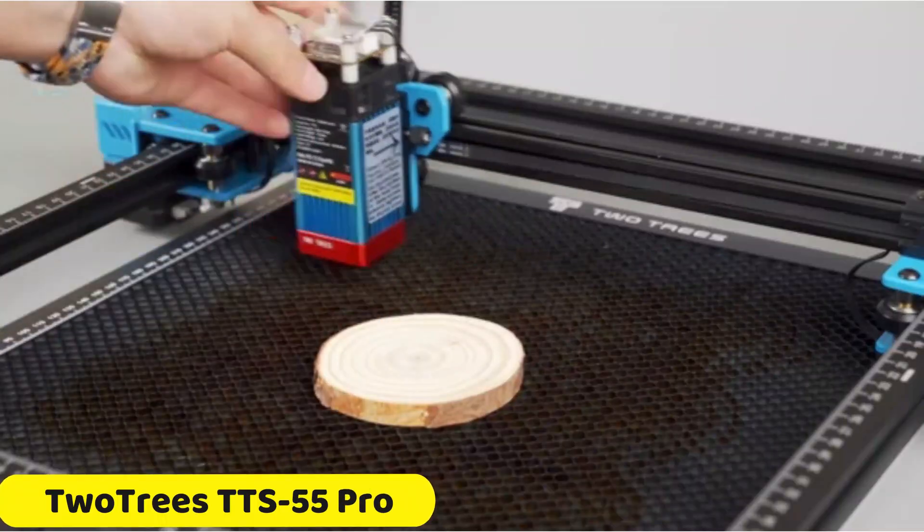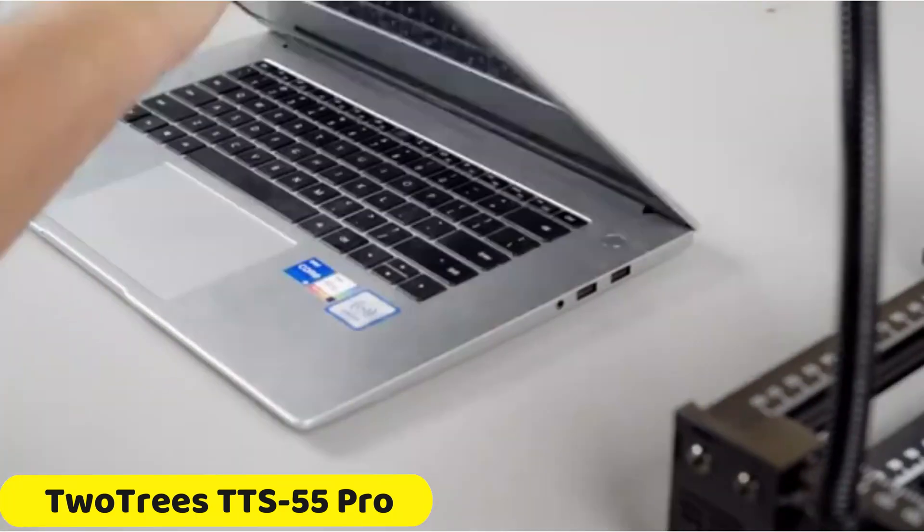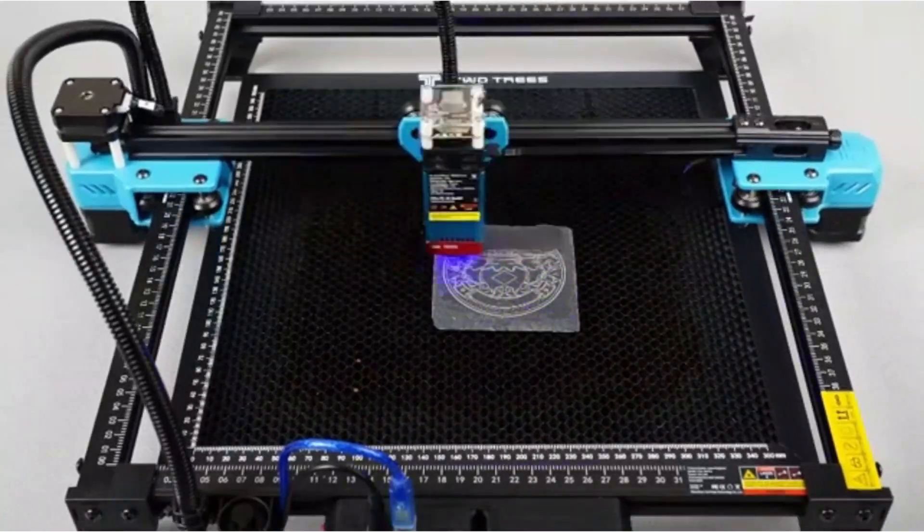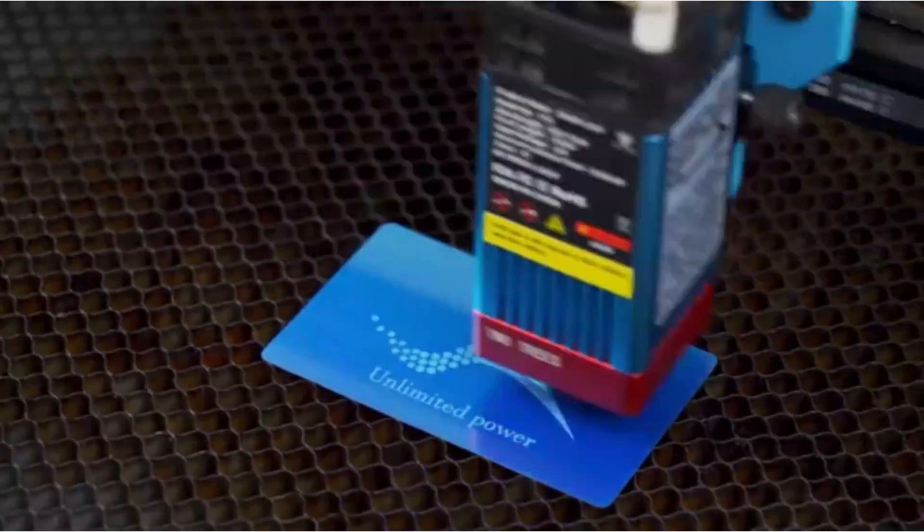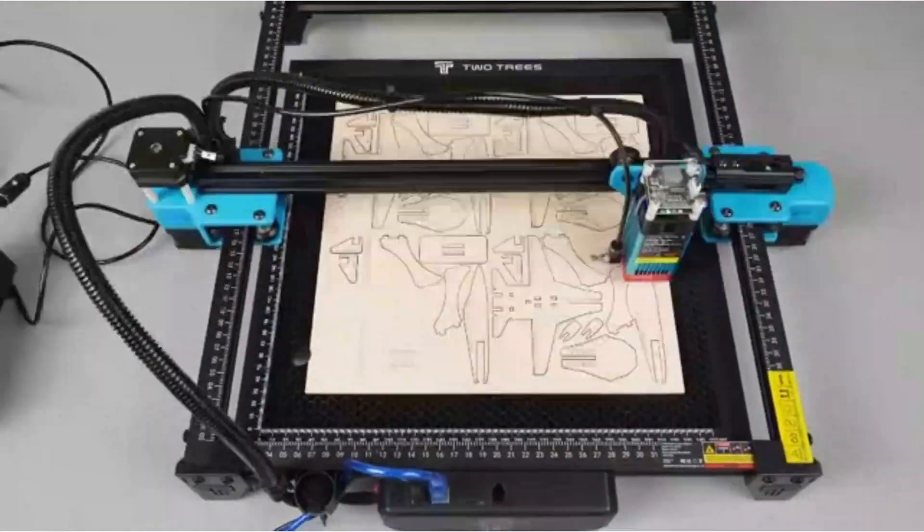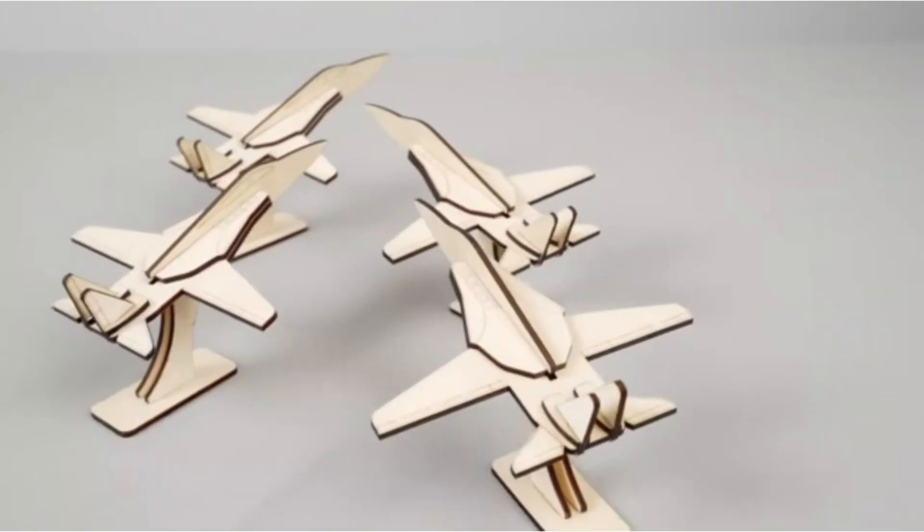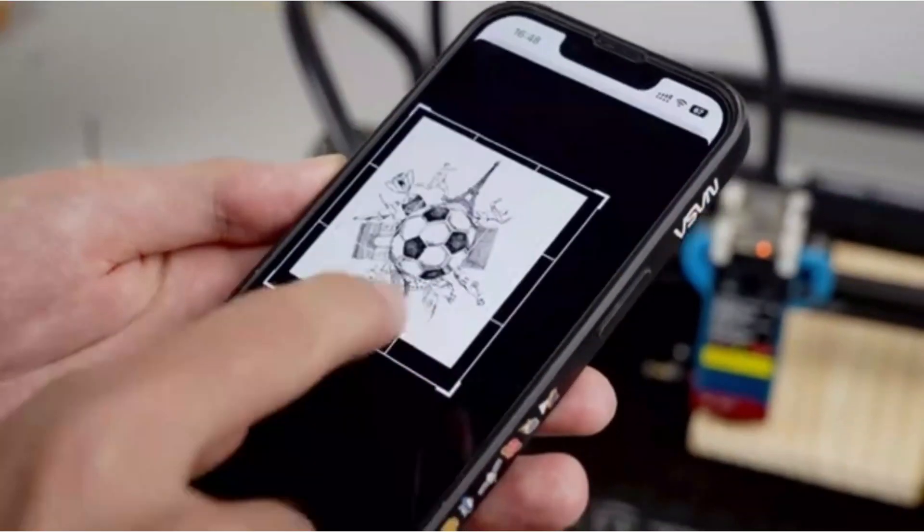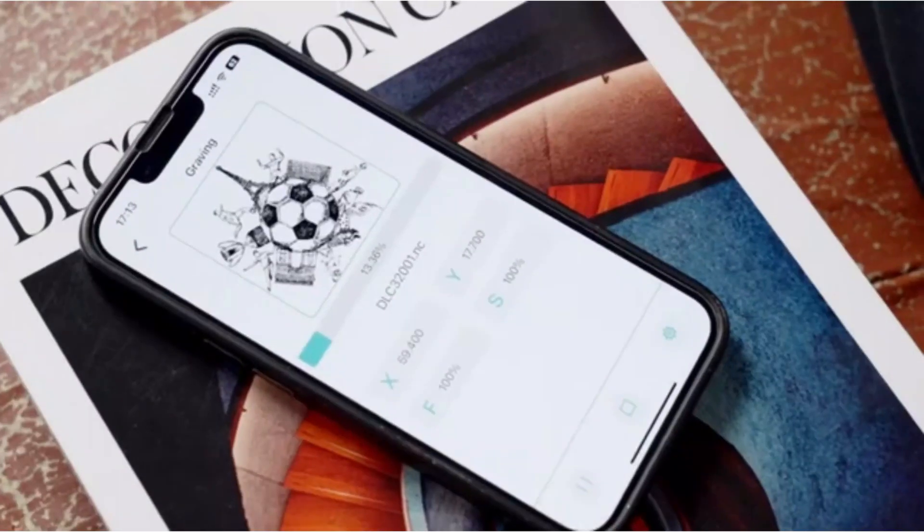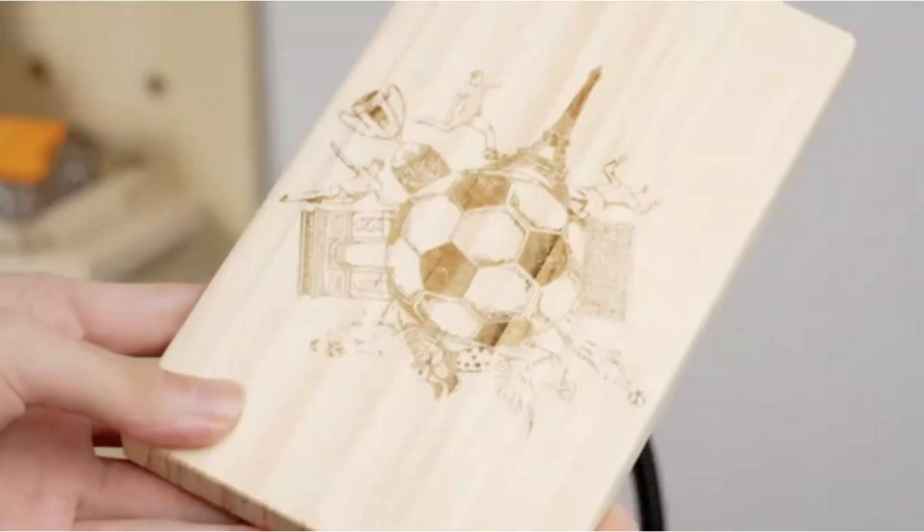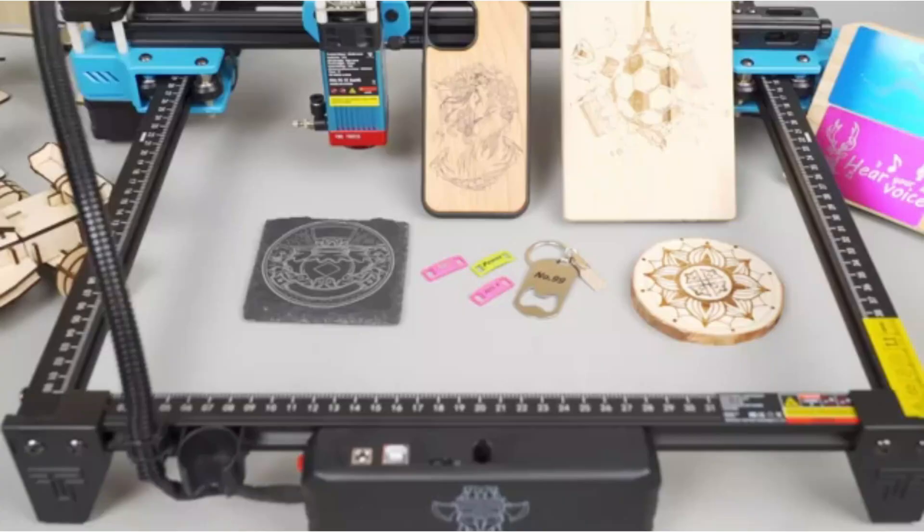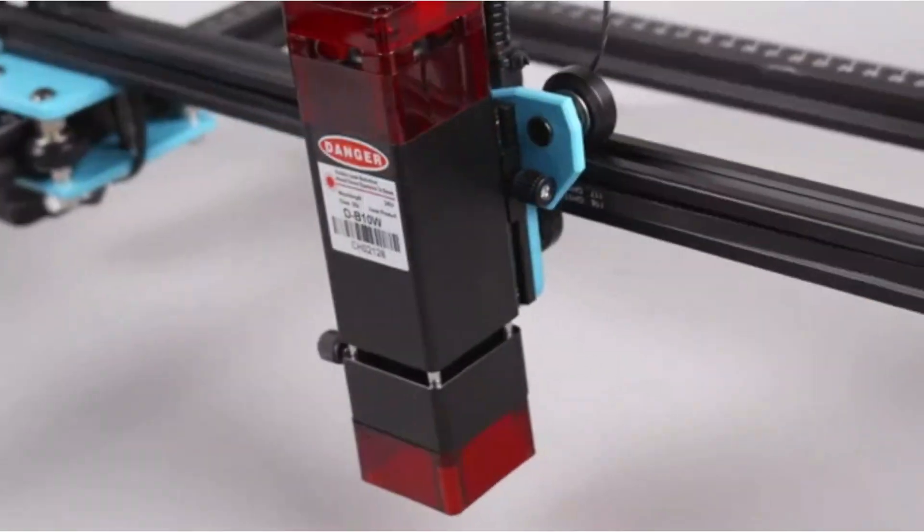Number 1. Twotrees TTS 55 Pro Laser Engraver. The Twotrees TTS 55 Pro Laser Engraver is a top-notch engraving solution that offers impressive engraving precision with a laser wavelength of 445 ± 5 nm. With a high-speed engraving speed of 30,000 mm/min, it ensures efficient and swift completion of projects without compromising output quality. The machine has a generous engraving range of 300-300 mm, accommodating various sizes.